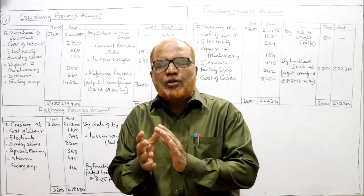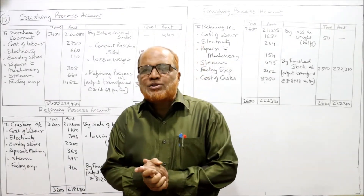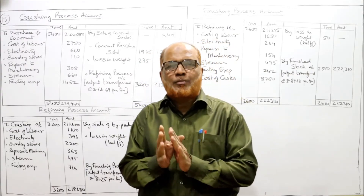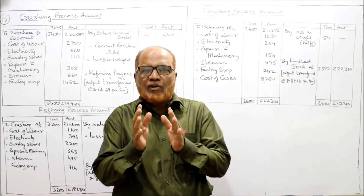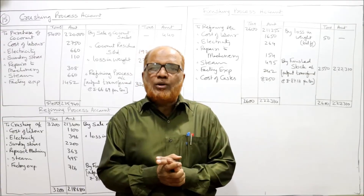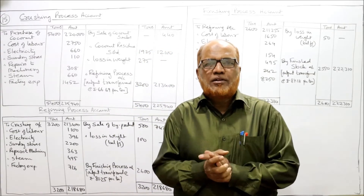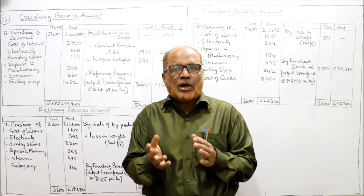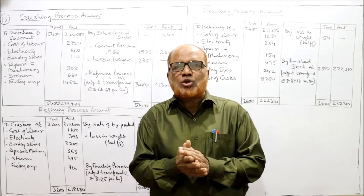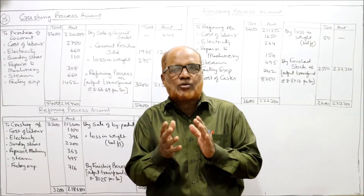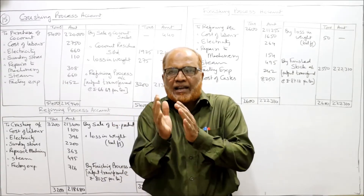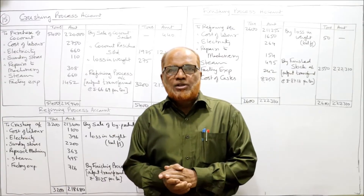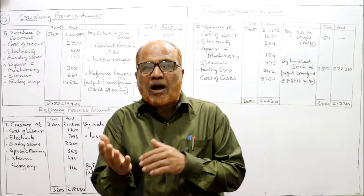Hello students, we'll continue the problems of process costing. So far we have completed 14 problems on process costing. If you have watched all the earlier problems, you are now in a good position to get a good command on the topic. Earlier we completed unit and output costing, job costing, contract costing, and now this is the final stage of process costing problems.